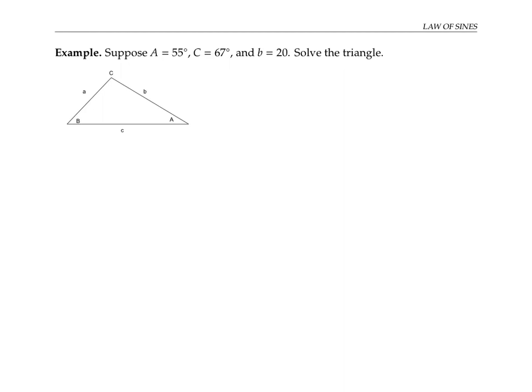Suppose we know that angle A is 55 degrees, angle C is 67 degrees, and side b is 20. We want to solve the triangle, that is, find the lengths of the other sides and the measure of the third angle. Since we know two angles already, we can find the third angle by subtracting from 180 degrees. So angle B is 58 degrees.